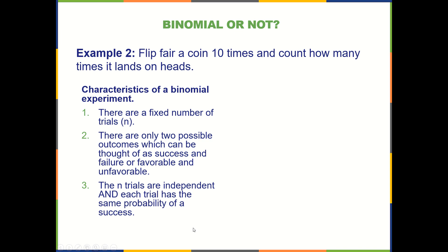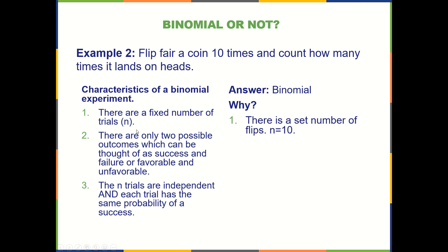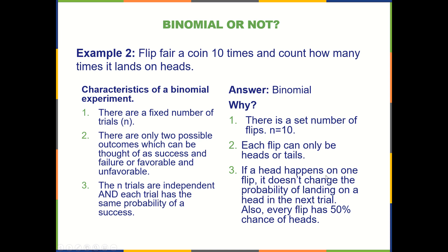How about flipping a fair coin 10 times and counting how many times it lands on heads? Is it binomial? Yes, it is, because it satisfies all three characteristics. There is a set n — a fixed number of trials — we're going to flip the coin 10 times. Each flip can only be heads or tails, so there are only two possible outcomes. If a head happens on one flip, it doesn't change the probability of landing on a head in the next trial, so that is independence. Also, every flip has a 50-50 chance of being heads, so we also have constant probability.